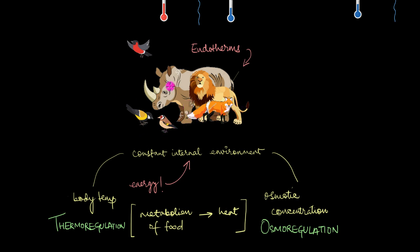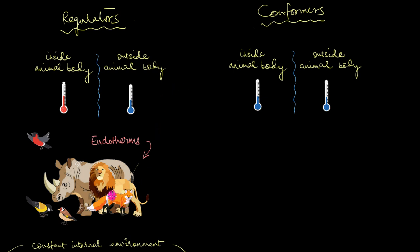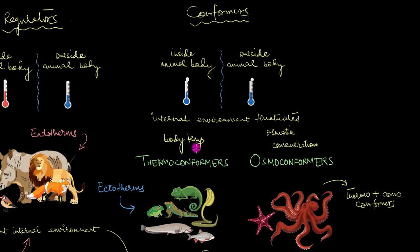But not all organisms can maintain this constant internal environment. They can't generate enough internal heat like we do, or they cannot regulate their osmotic concentrations like a pro. That means their body temperature or osmotic concentration fluctuates with their surroundings. These organisms are called conformers. When their body temperature fluctuates, they are called thermoconformers or heat conformers.